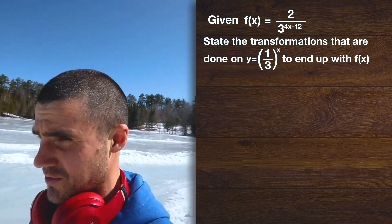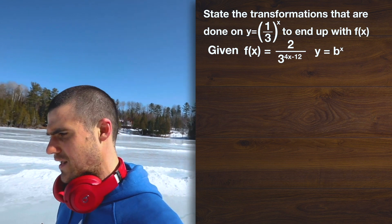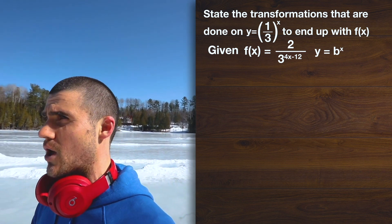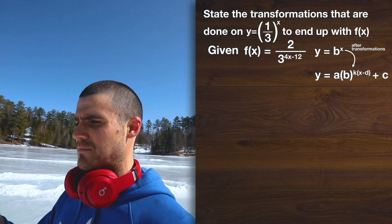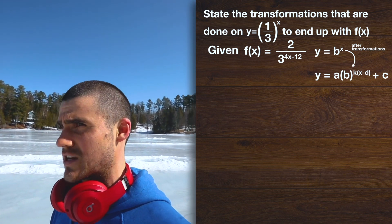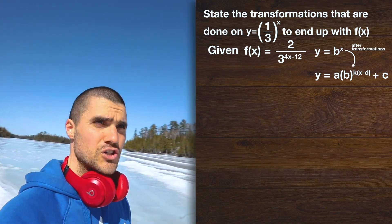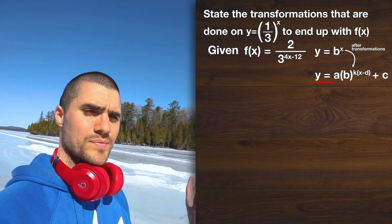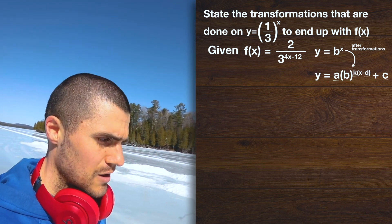I'm actually walking on snow in the middle of the lake. Now, as we know, as we've gone through in previous videos, an exponential function b to the power of x — just any exponential function, once we put it through transformations — the general format is going to be y equals a times b to the power of k bracket x minus d, plus c. That's the general transformation format. So what we've got to do is take the function we have and put it in that same general transformation format, because then we can get the transformation values — the a, k, d, and c values — and then we can state what the transformations are.